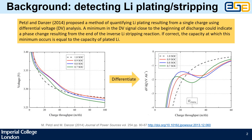One way of detecting lithium plating is through the inverse process, lithium stripping. It's well known that if you discharge after a fast charge, or leave the battery to rest after a fast charge, you get this high voltage plateau as you can see on the left — that's an indicator of lithium plating. In 2014, Petzl and Dancer proposed differentiating the standard VQ curve to get a dV/dQ versus Q curve, which has a minimum indicating the end of the high voltage plateau and, so Petzl and Dancer believed, the end of the stripping process. If that's true, the capacity at which the minimum occurs is the capacity of lithium that was stripped, so you can quantify lithium plating.